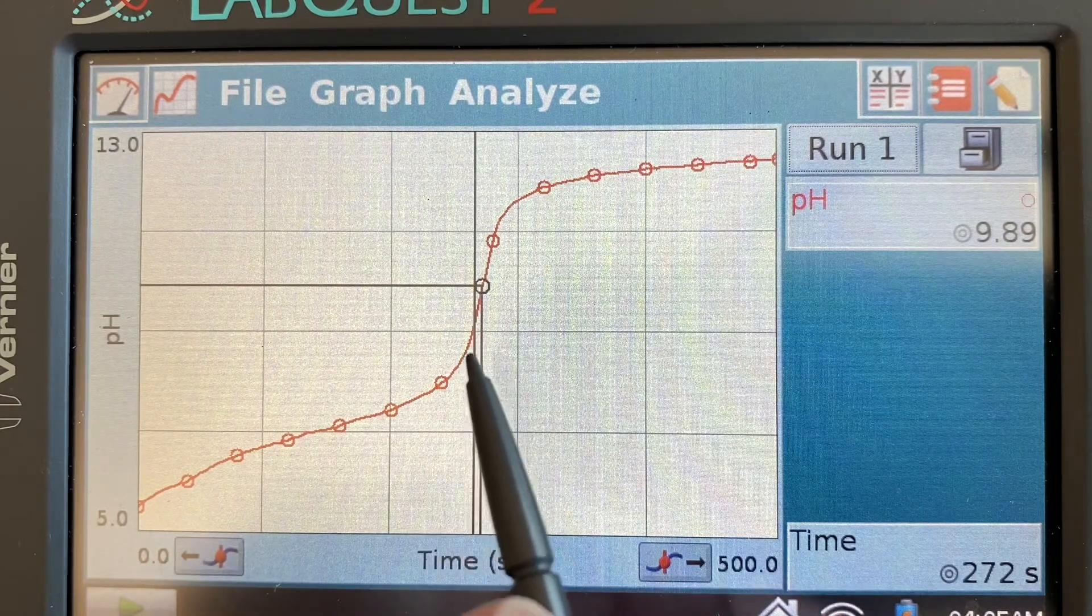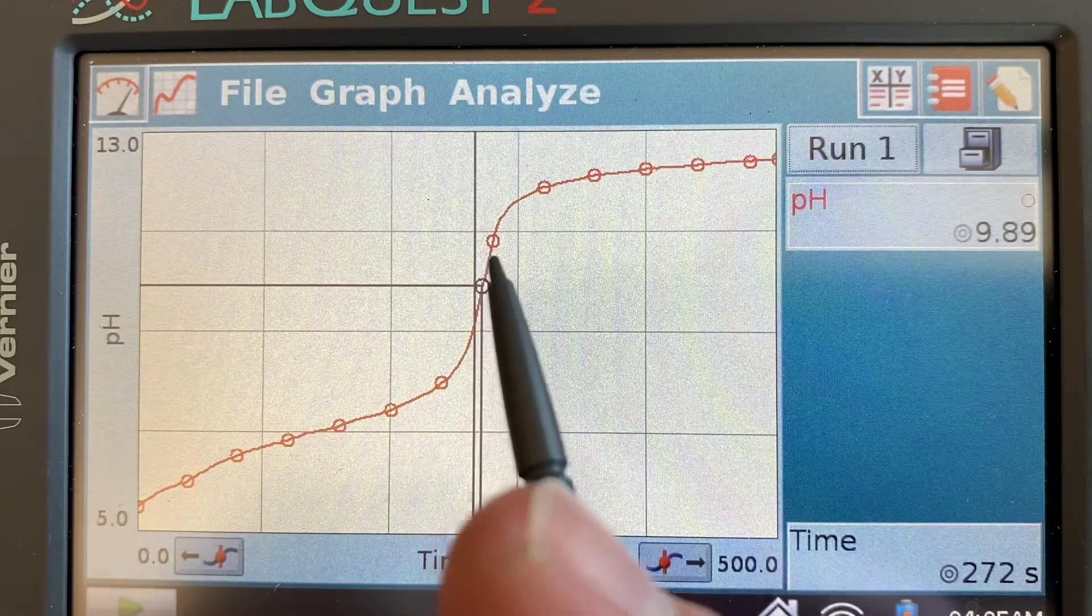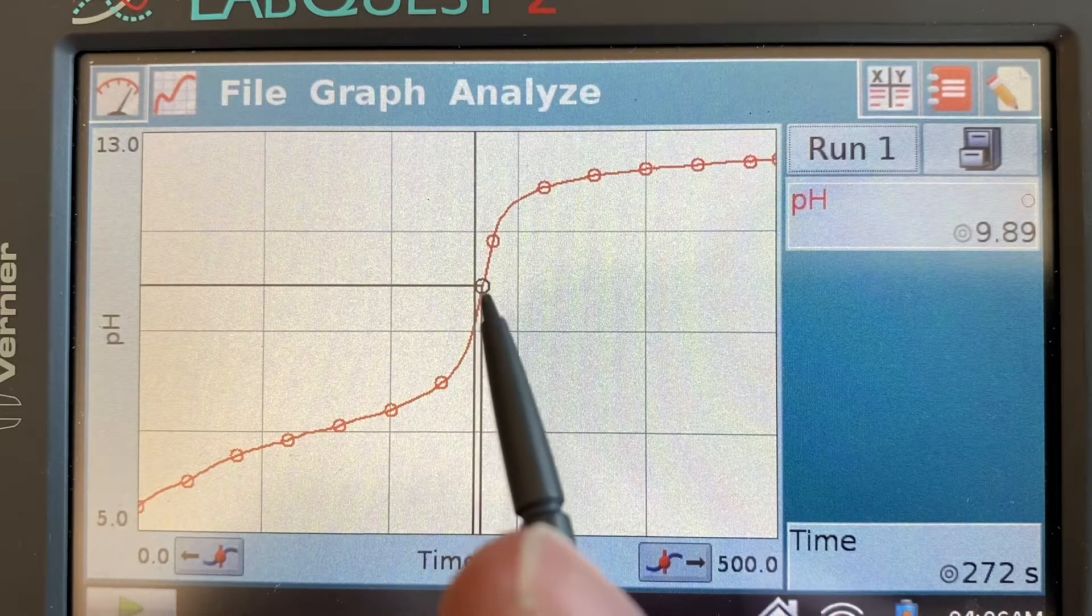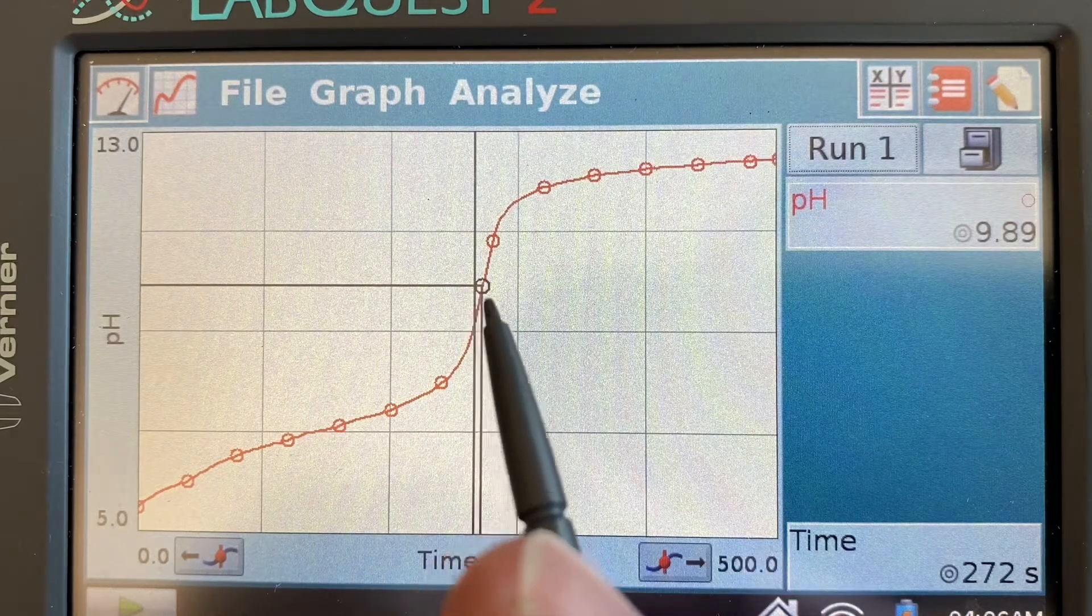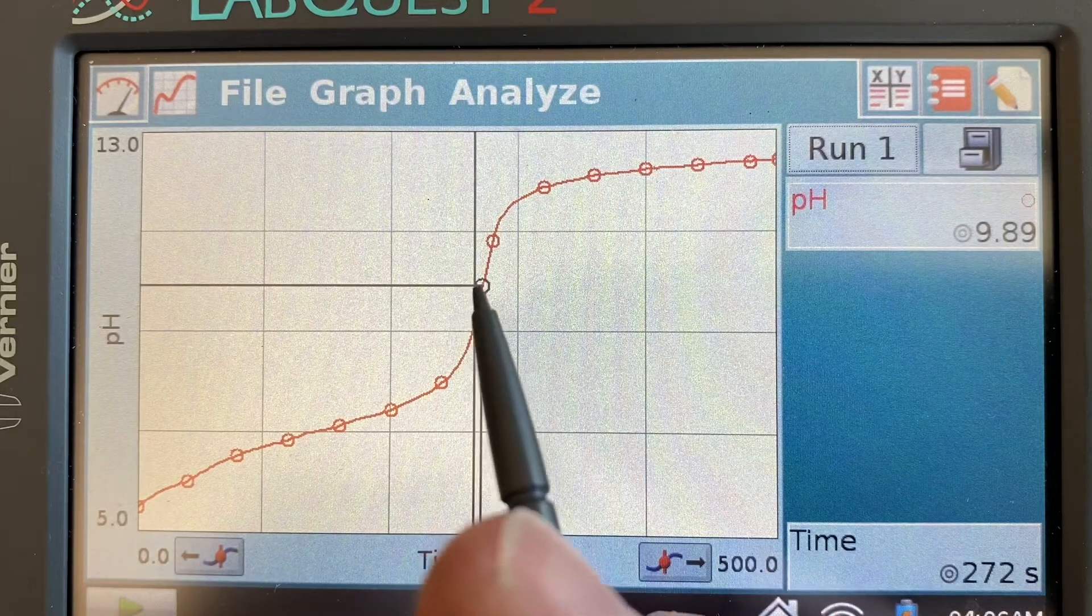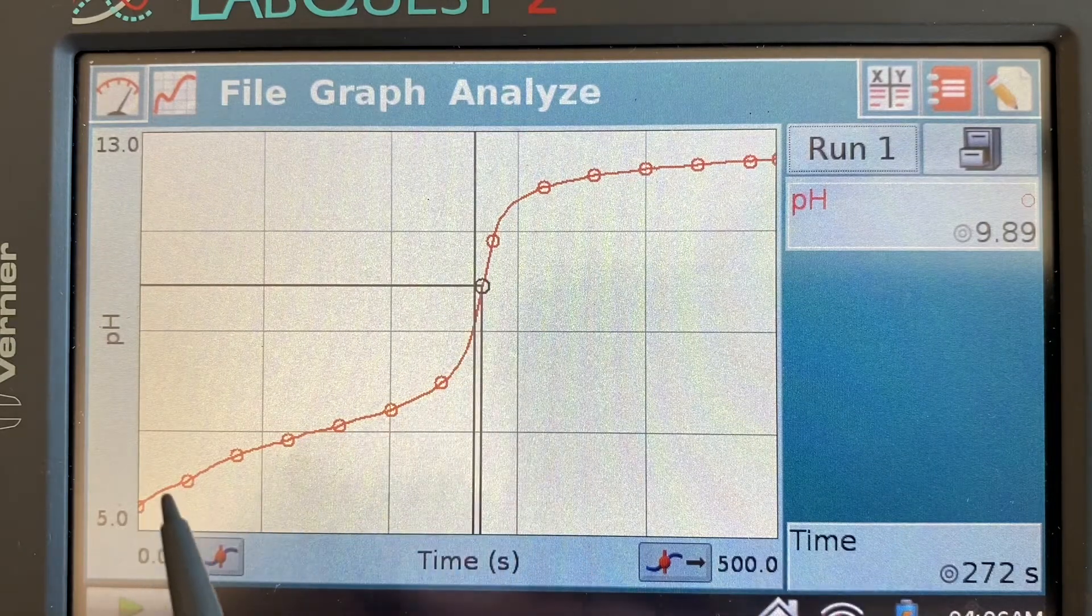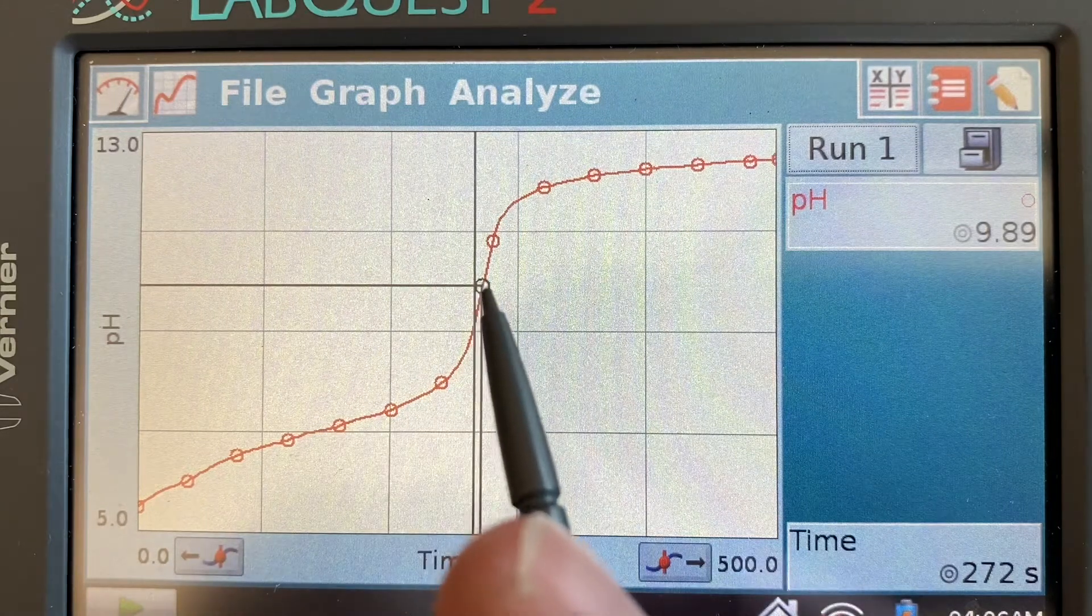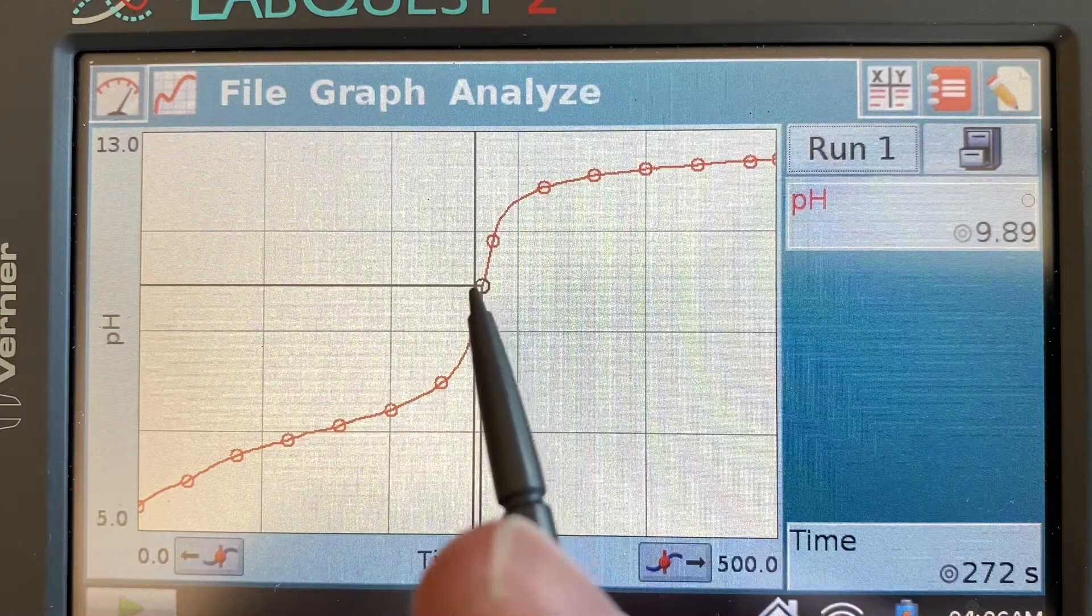Now you'll notice here there's a sharp increase in pH and that indicates that we're getting close to the equivalence point. In fact the equivalence point is the point halfway up that steepest part of the curve where the entirety of the weak acid has been neutralized and now we have its conjugate base only present in the beaker.